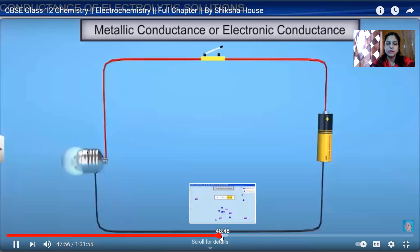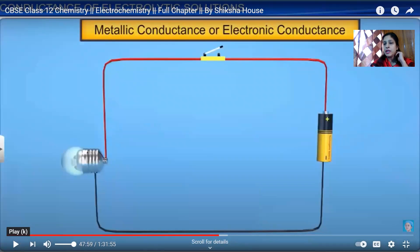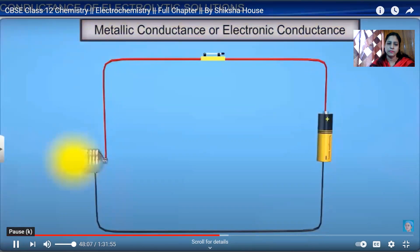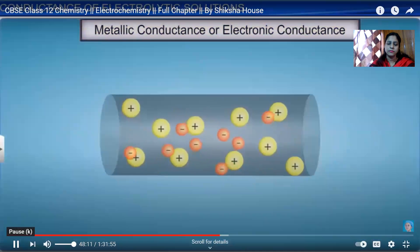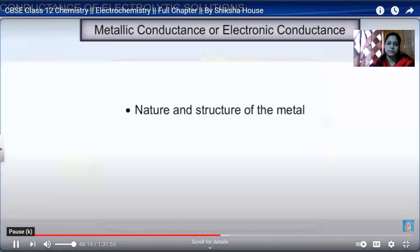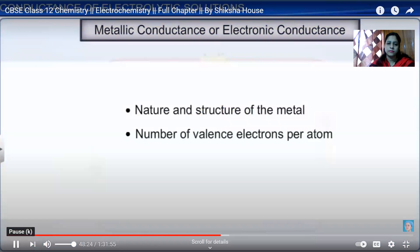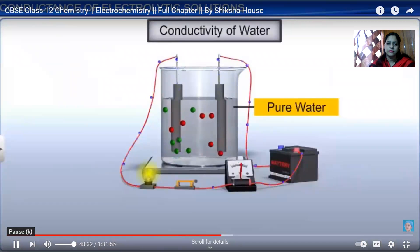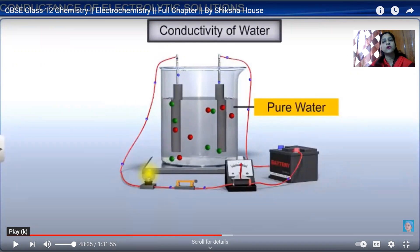Metallic conductance, or electronic conductance, is the electrical conductance through metals. The conductance is due to the flow of electrons in the metal. Metallic conductance depends on the nature and structure of the metal, the number of valence electrons per atom, and the temperature of the sample.